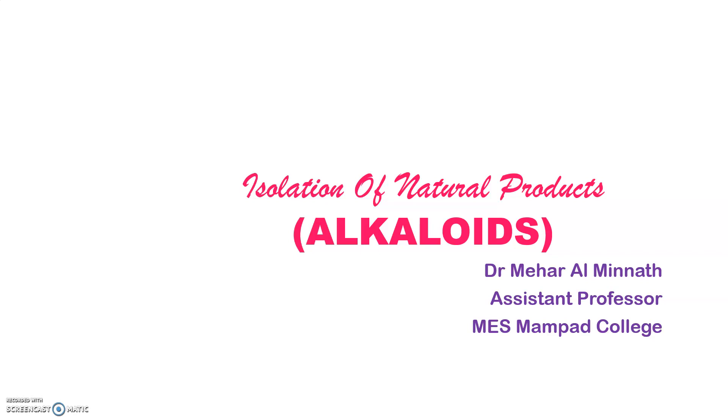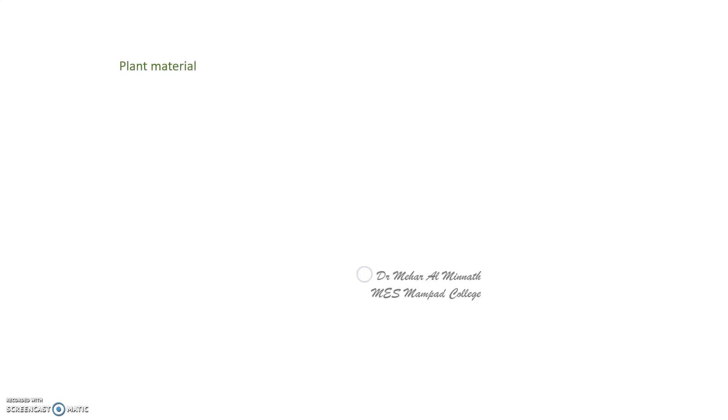Coming to a brief explanation of the isolation of alkaloids — alkaloids can be separated or extracted by two to three different ways.